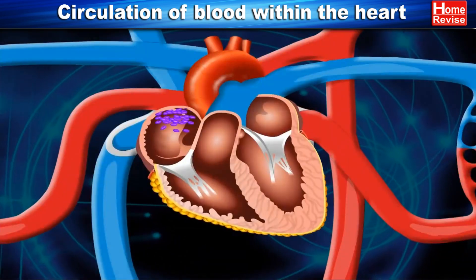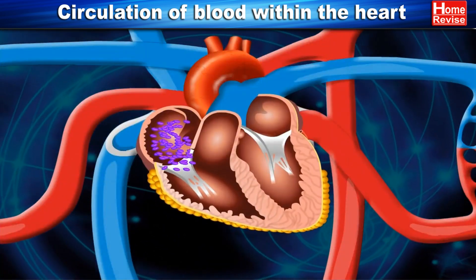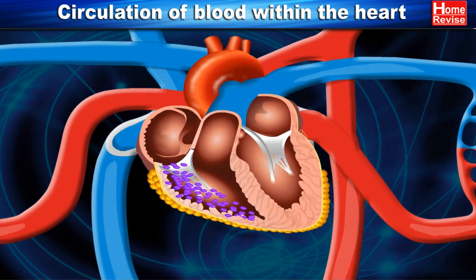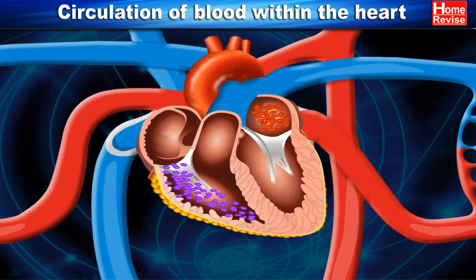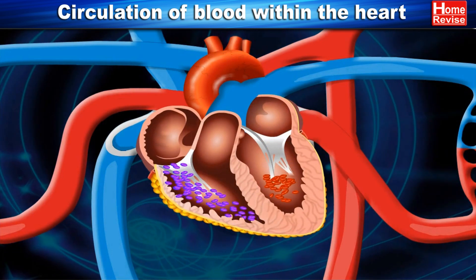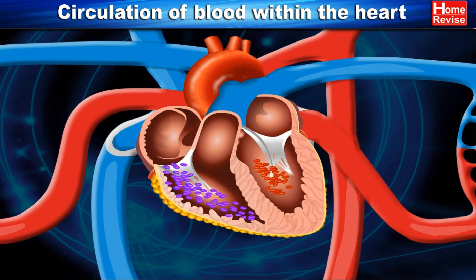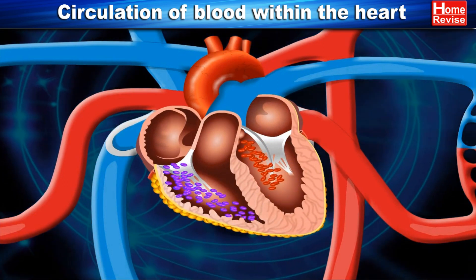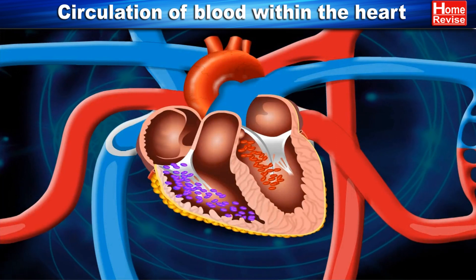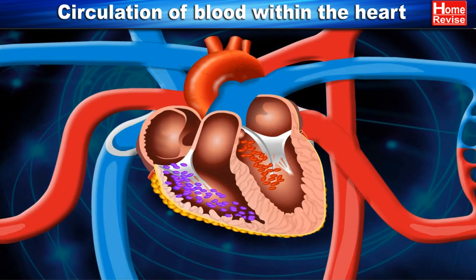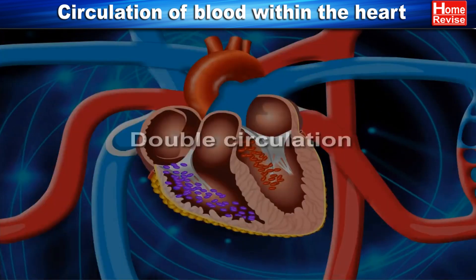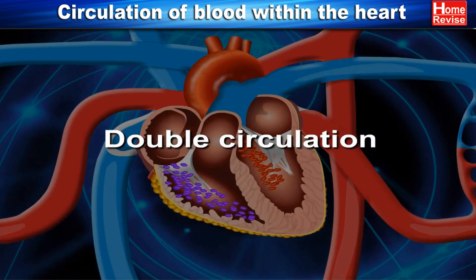Thus, deoxygenated blood enters the right part of the heart and after oxygenation it enters the left part of the heart. The blood goes through the heart twice during each cycle. This is known as double circulation.